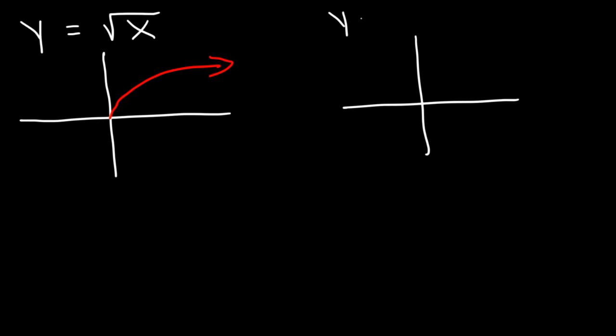What if we put a negative sign in front of the square root of x? If we put a negative sign, this is going to flip over the x-axis — it reflects over the x-axis.